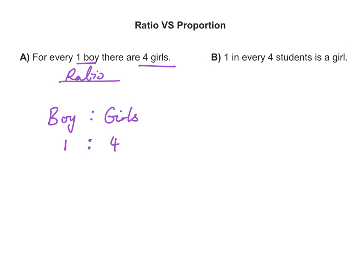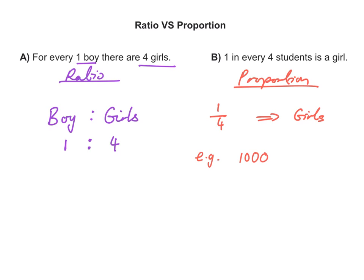Statement B is a proportion. In statement B, we are being told that one in every four students is a girl — in other words, a quarter of the students are girls. This quarter is with respect to the total number of students. So, for example, if there were 1,000 students, a quarter of 1,000 is just 250, so there would be 250 girls.